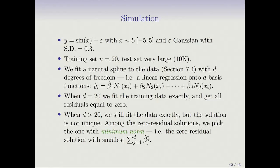When d is 20, you have exactly the same number of features as training observations, and because these basis functions are all different, you're going to fit the training data exactly — all residuals equal zero. But we're going to go further and let d get bigger than 20. When d is bigger than 20, you still get zero residual solutions, but they're not going to be unique. At exactly 20, you get a single solution, but when d is bigger than 20, there are infinitely many solutions with zero residual.